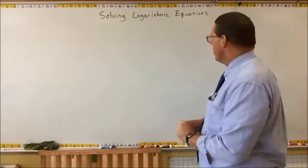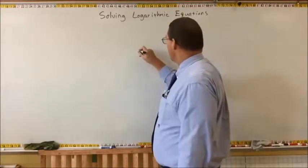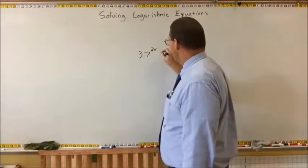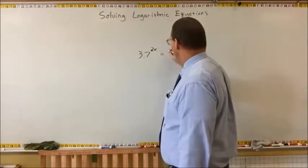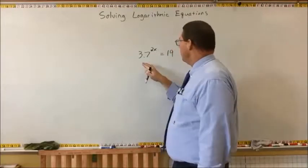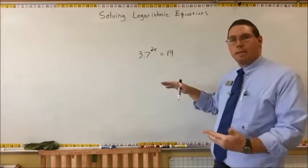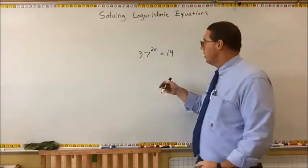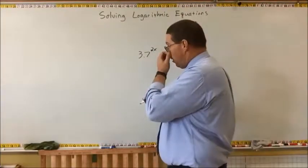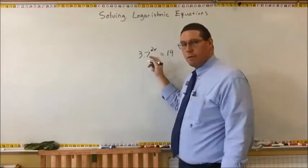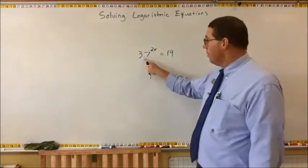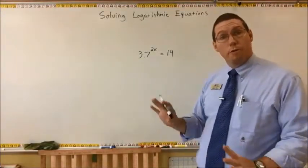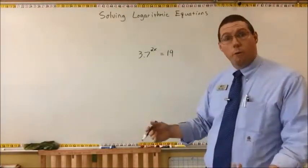As a reminder, let's say that we have 3.7 to the 2x power is equal to 19, and we want to solve for x. This is an exponential equation because there is an x in the exponent of a base. The way that we solve for this x is we have to get rid of the exponential base, and we do that with a logarithm. We are simply reviewing here something you already know how to do.